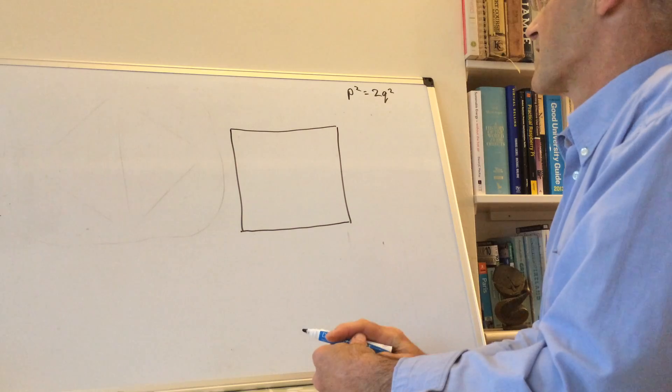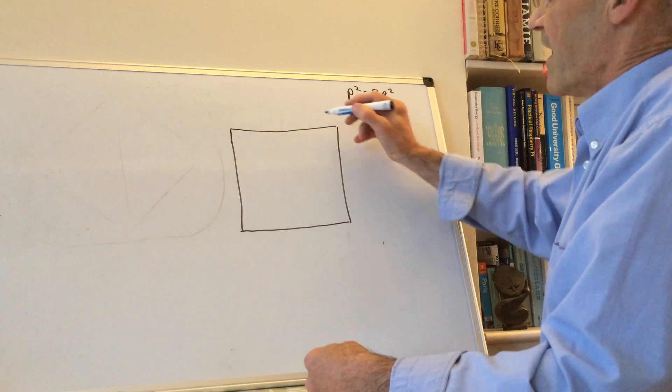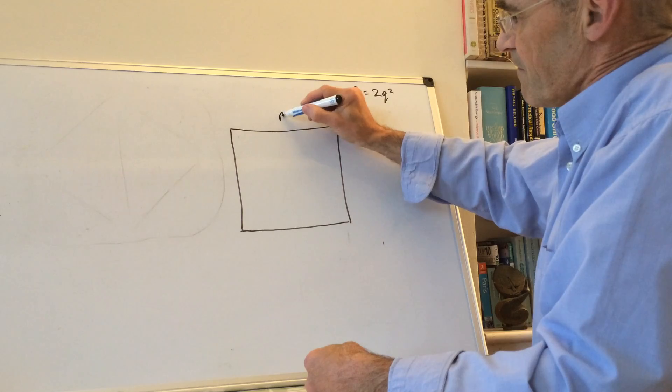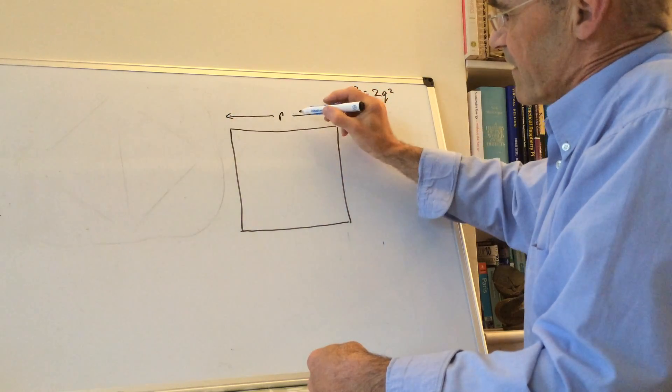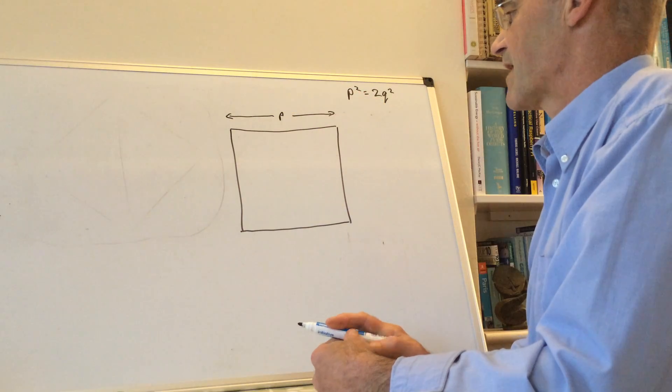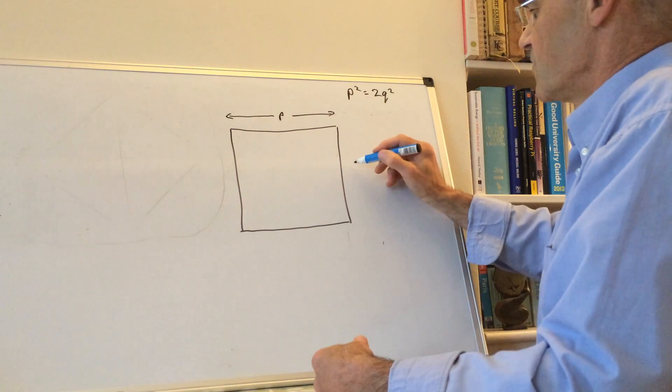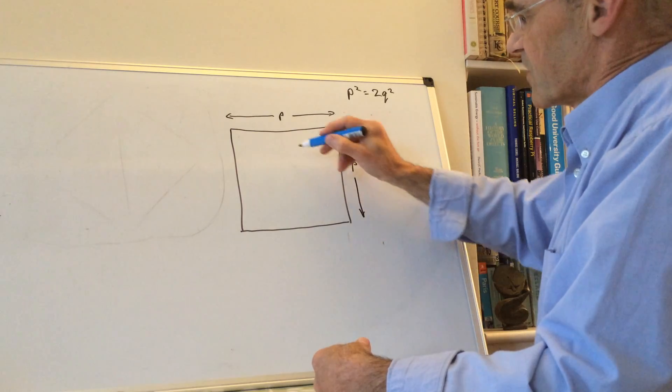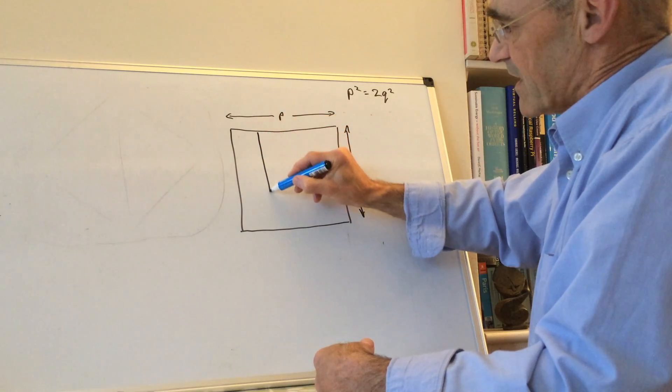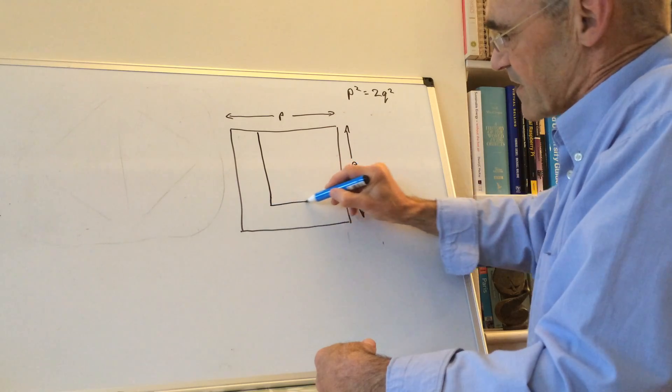So that's going to be my square of side p, and that's equal to the sum of two smaller squares of side q. So I'm going to draw those in, I'm going to put them inside so that they overlap.